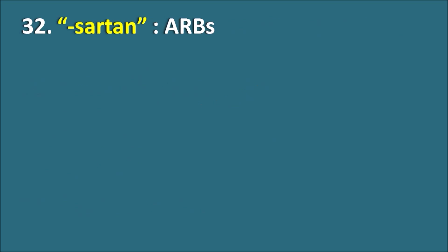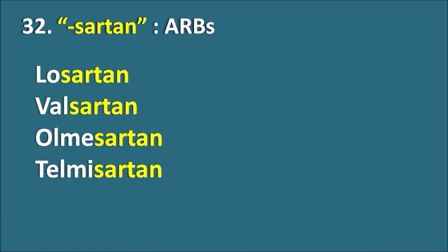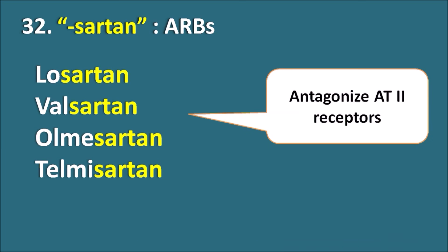Thirty-second, the suffix '-sartan' indicates they are angiotensin receptor blockers. Drugs like Losartan, Valsartan, Olmesartan, and Telmisartan are angiotensin receptor blockers. As these drugs antagonize the angiotensin 2 receptors, they can be used as antihypertensives.